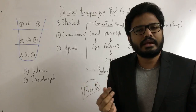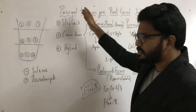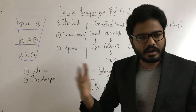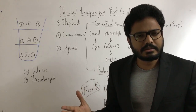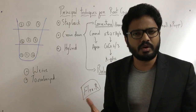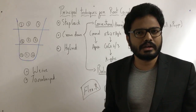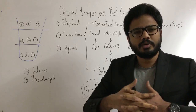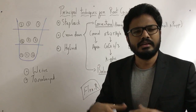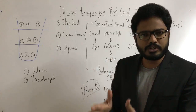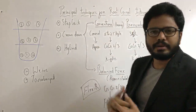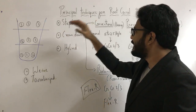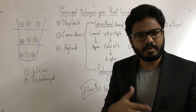Regarding instruments: for step-back technique we use stainless steel hand files — K-files and K-reamers — to clean the apical, middle, and coronal thirds. All rotary systems follow crown-down or hybrid technique. For motions: in step-back and hybrid technique, the coronal third is cleaned using reaming motion and the apical third using circumferential filing. In crown-down technique, we use reaming motion throughout. Each technique has its own purpose.